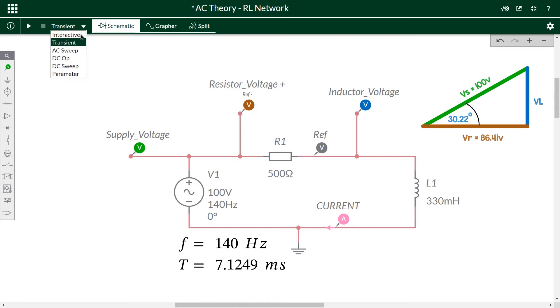On Multisim we can choose interactive simulation which will simulate in real time, or we can choose transient analysis which just means simulating for a set amount of time. If we choose transient analysis we need to make sure the time is enough for the reactive circuit to stabilize, but the graphs will appear straight away.